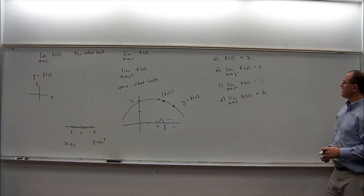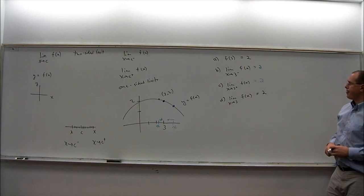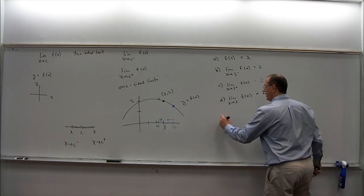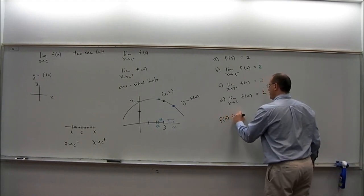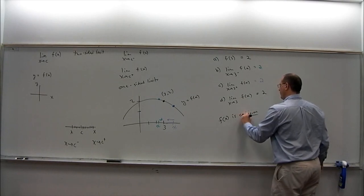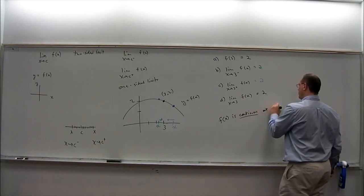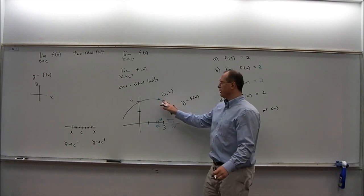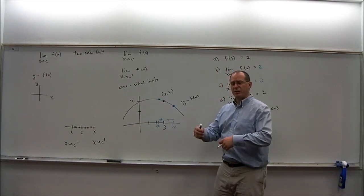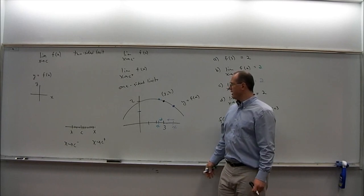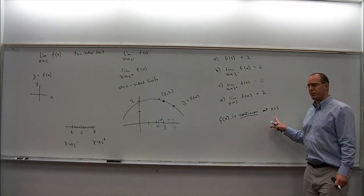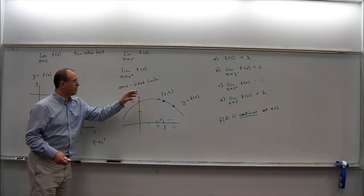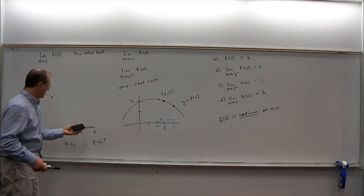Looking back, all four of these answers agree. That's important: when all of these numbers agree, we can say that f of x is continuous at x equals three. If you just draw an average curve without any jumps, breaks, or skips in the graph, then this is going to be the general situation. Now we'll look at some other examples where things aren't quite so nice and all four values are not the same.